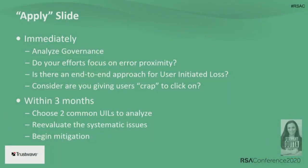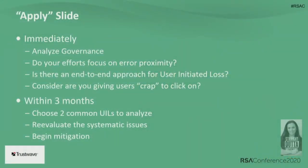We believe you are magic and can make this happen. When you get back, immediately analyze your governance and see what you currently have in place to put this model into effect. Ask: do you focus on the proximity of the user to boom? Is it really the user's fault? What are you doing preemptively and in response? How are you implementing a feedback loop? Is there an end-to-end approach for user-initiated loss? Within the next three months, choose at least a couple of common user-initiated loss scenarios in your organization and use this model to help your business partners implement the right strategy.